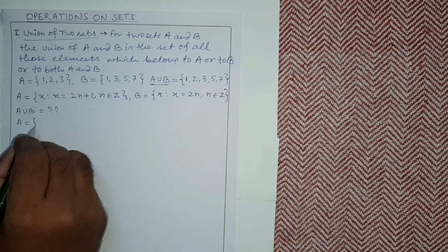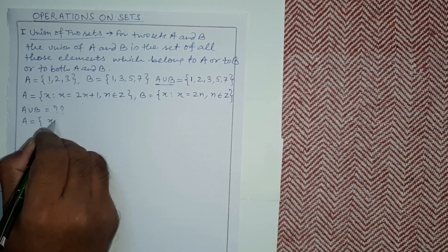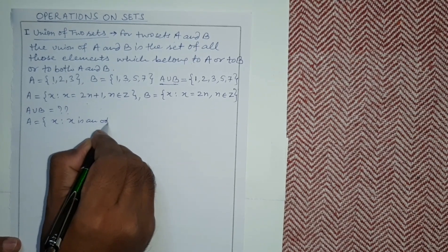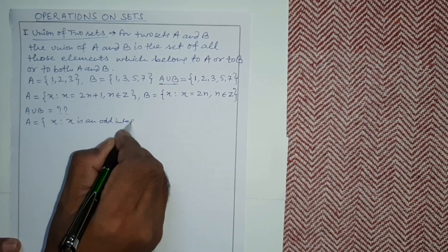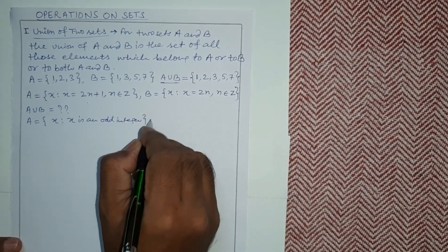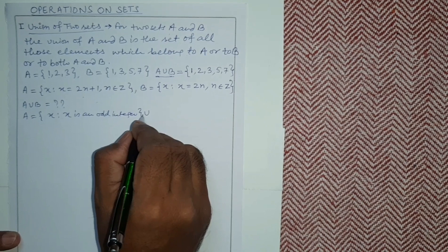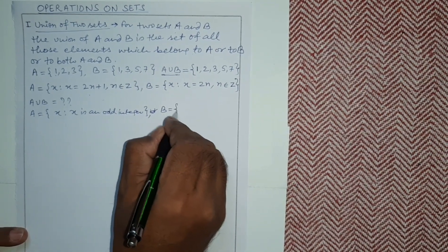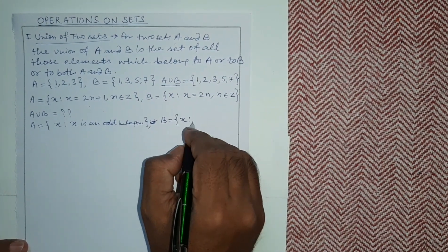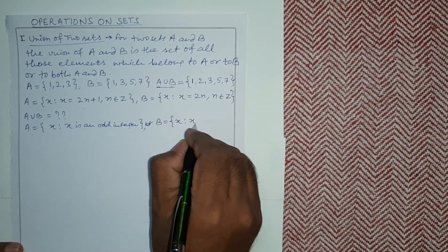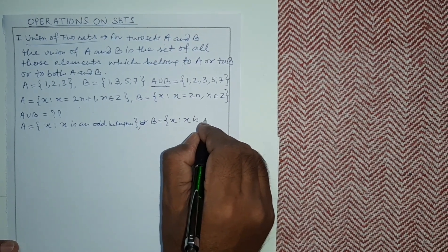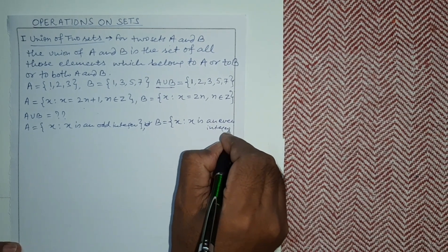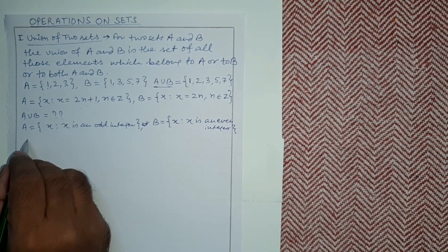Now a second example: A is the set of all x such that x is an odd integer, and B is the set of all x such that x is an even integer. So what will A union B be?